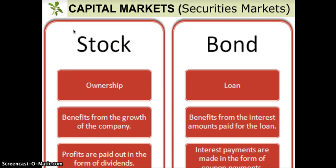First of all, it's important to note that capital markets are marketplaces where individuals meet up with corporations. Individuals come to the table with money and corporations come to the table with a need for money. They negotiate virtually some sort of arrangement or deal and a transaction takes place. Capital markets were formed as a way for companies to gain access to money to expand their businesses and operations.